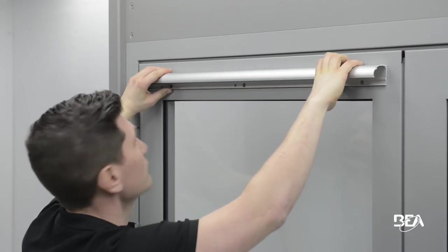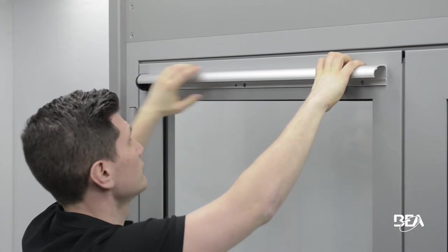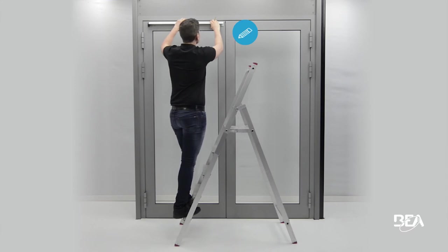Place the profile on the door as close as possible to the leading edge. Remember to keep a 2cm margin for the second end cap. Mark the position of the small holes.